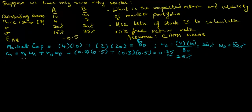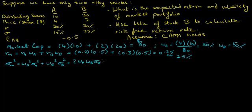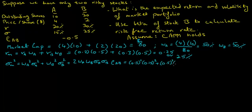So the expected return on the market portfolio is 25%. Now let's calculate the variance of the market portfolio. The variance equals the weight of company A squared times the variance of A, plus the weight of company B squared times the variance of B, plus 2 times the weights of A and B times the volatilities of A and B times the correlation between A and B.